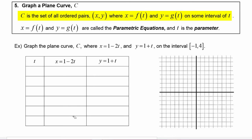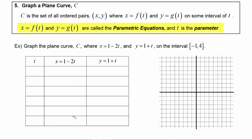C is the set of all ordered pairs x, y where x is equal to f of t, some function of t, and y is equal to g of t, some other function of t, on some interval of t. These two equations, x equals f of t and y equals g of t, are called the parametric equations, and t is the parameter.